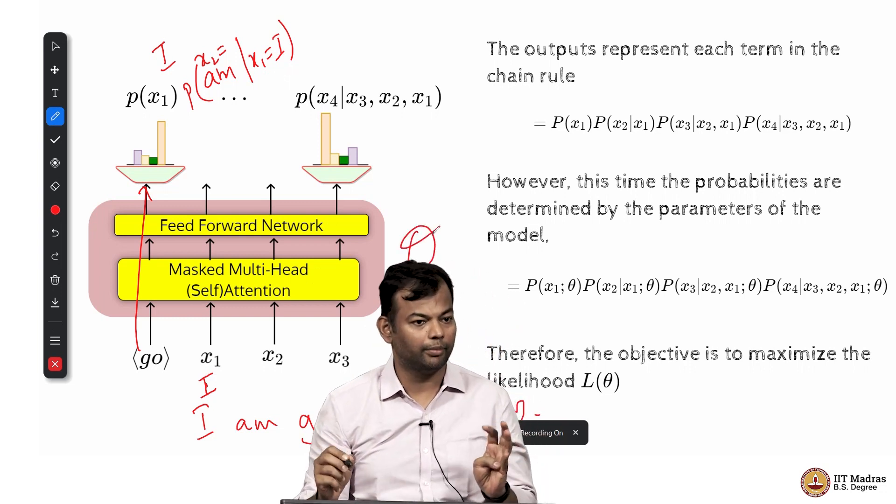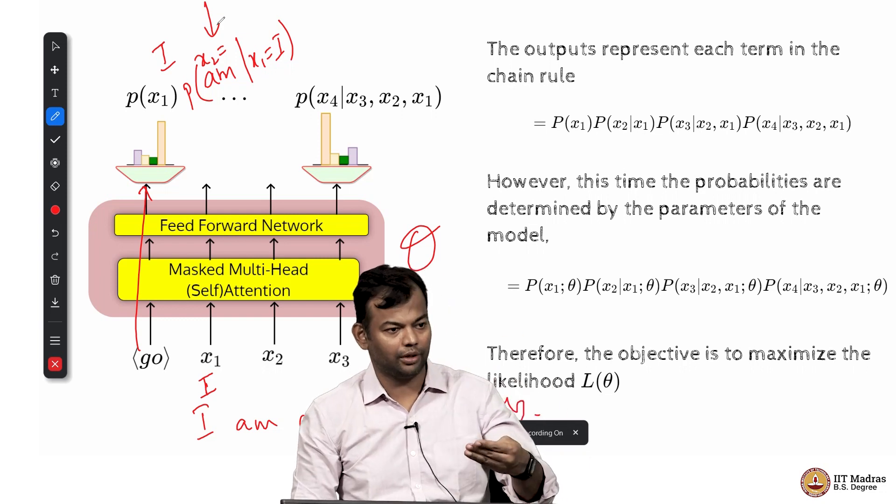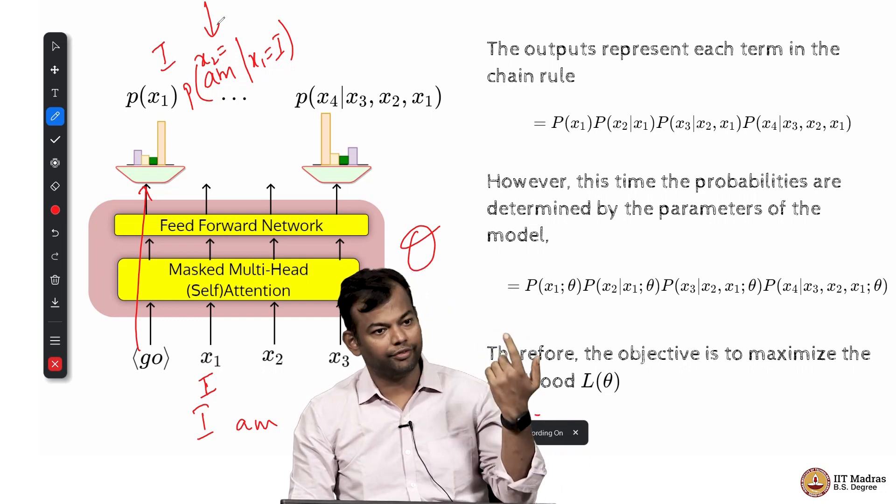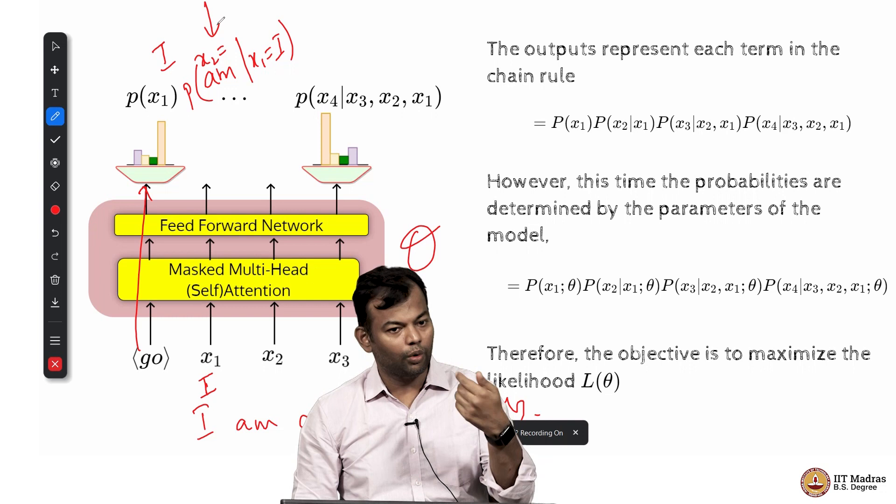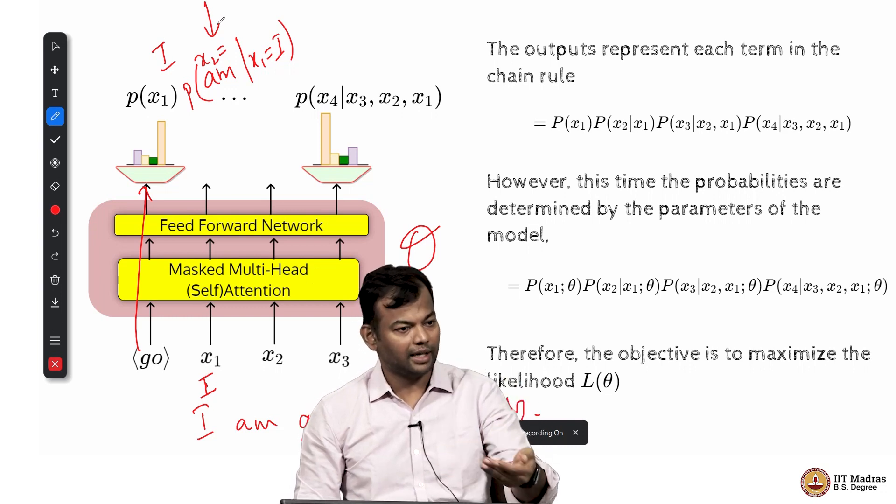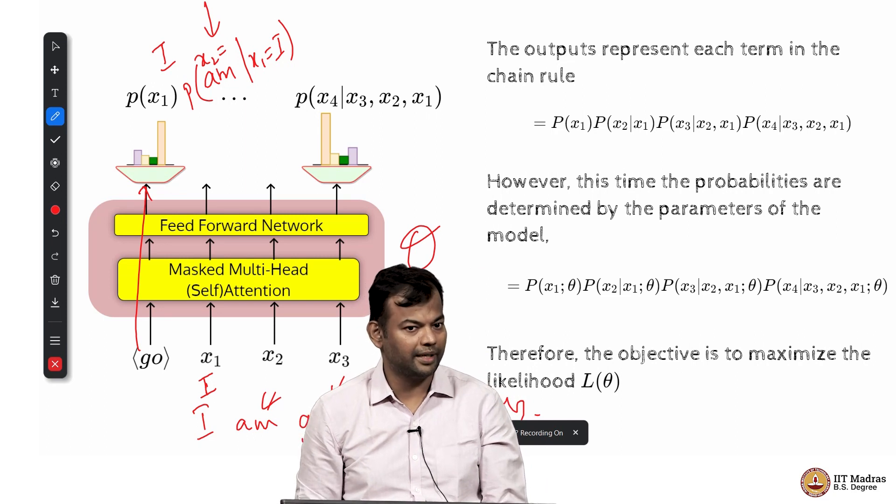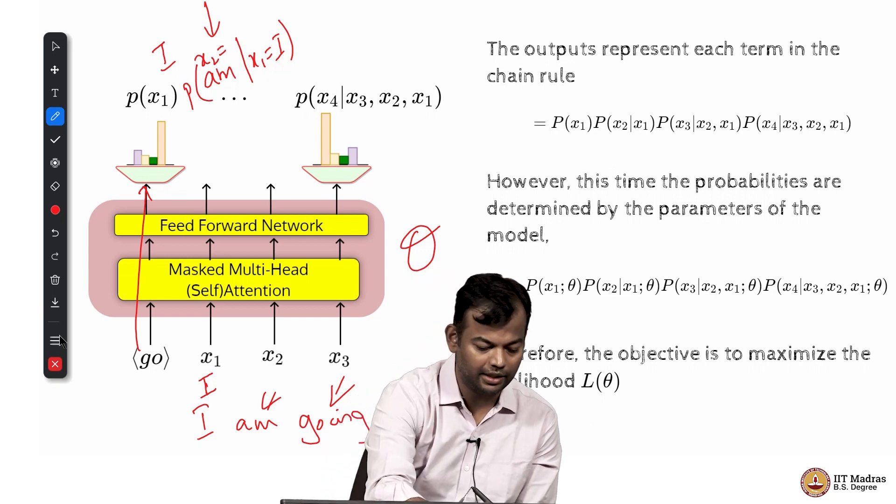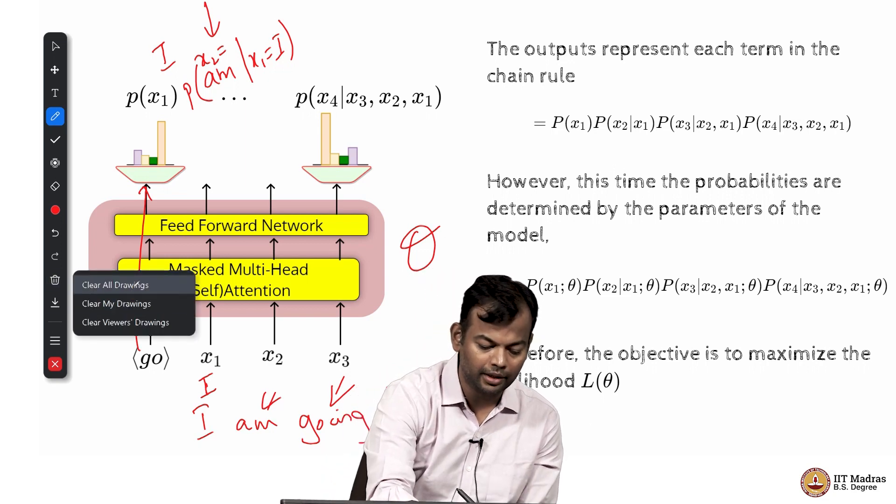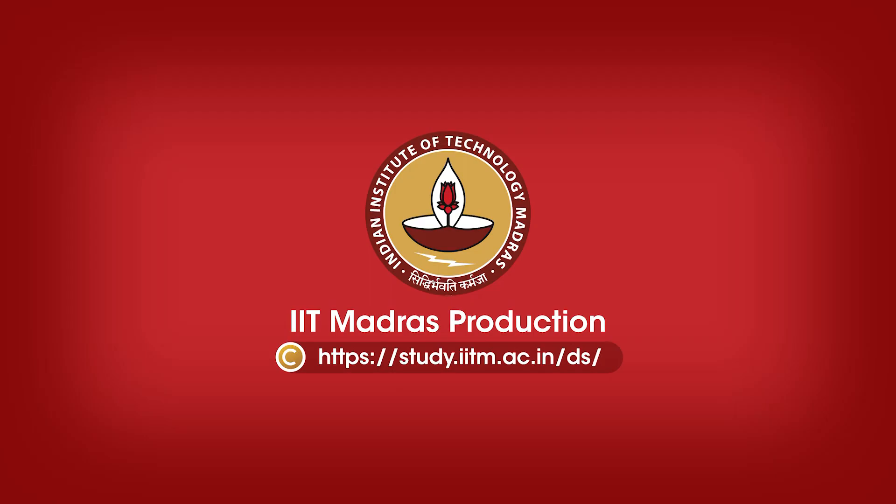So the same back propagation algorithm will be used and you will keep adjusting the parameters theta, till over a period of time, your probabilities start aligning with what you actually want them to be. That means, the predictions are correct. Does that make sense? The correct word gets the maximum probability. These are all things that we have seen in the previous course of how to maximize objective function. So check them out. Thank you.